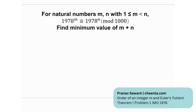So for all natural numbers m and n with the given condition — n is greater than m — we need to find the minimum value of m plus n such that it satisfies the congruence equation: 1978 raised to the power m is congruent to 1978 raised to the power n modulo 1000, where n is greater than m.